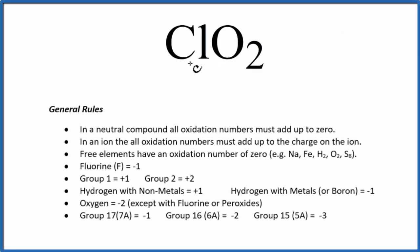To find the oxidation number for each element in chlorine dioxide, not to be confused with ClO2- that would be the chlorite ion. So ClO2, chlorine dioxide, we use these rules here.